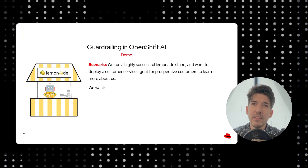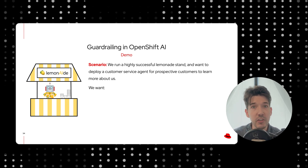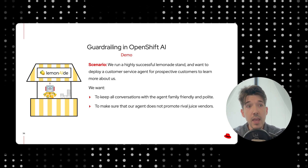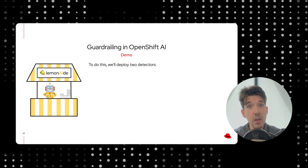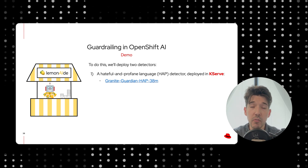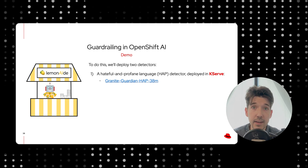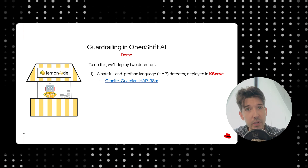In this demo, let's imagine we are a highly successful lemonade stand, and we want to deploy a customer service agent for our prospective customers to ask us about our lemonade. We want two things: one, we want to make sure that all conversations are family-friendly and polite, and two, that our customer service agent does not promote our rival fruit juice vendors. To do this, we'll set up two detectors. The first will be a hateful and profane language detector, or HAP. The detector we'll use is IBM's Granite Guardian HAP model — a small 38 million parameter language model designed to detect for hateful language, aggressive language, and profanity.